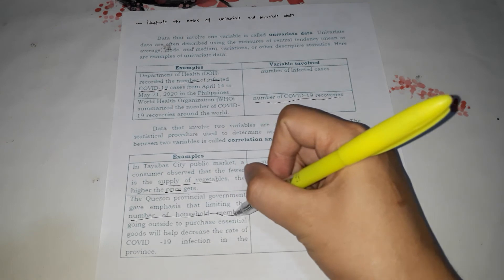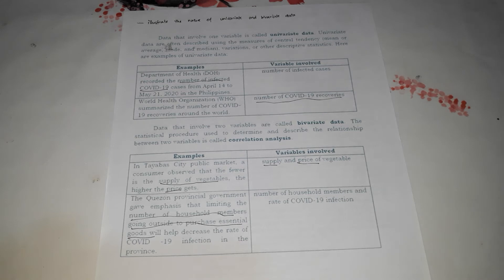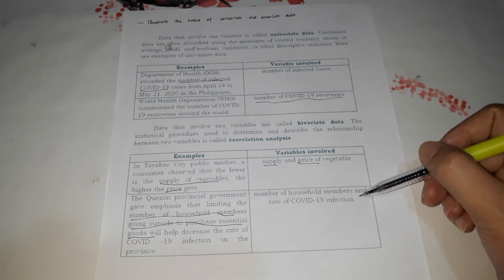Another example: the Quezon provincial government emphasized that limiting the number of household members going outside to purchase essential goods will help decrease the rate of COVID-19 infection in the province. The two variables being related are the number of household members going outside and the rate of COVID-19 infection. Therefore, this is bivariate data because there are two variables.